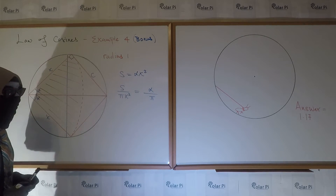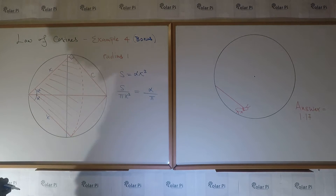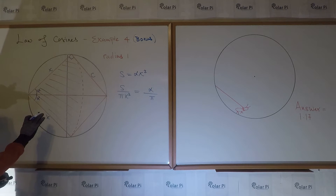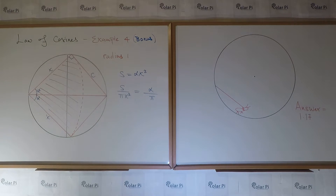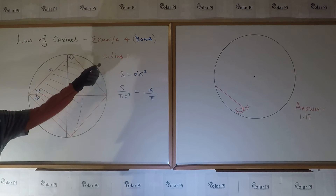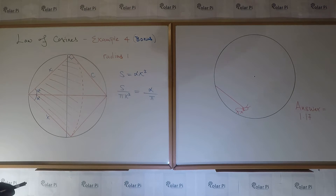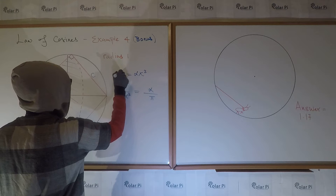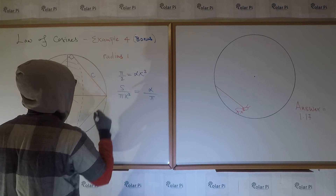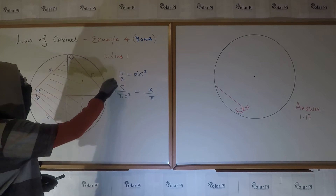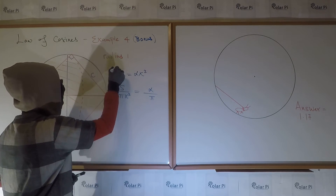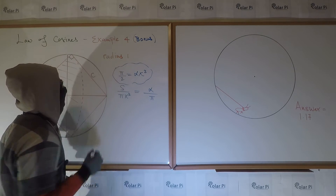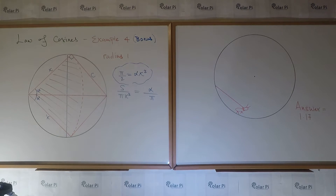We now know what the sector's area has to be, because it has to be at minimum half the area of the black circle. Since the black circle has a radius of one, its area is pi, and half of that is pi over two. So alpha x squared equals pi over two. That's our first equation in alpha and x, and we need to come up with a second equation.